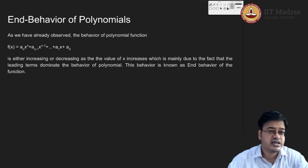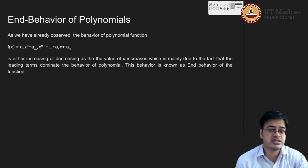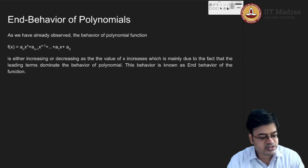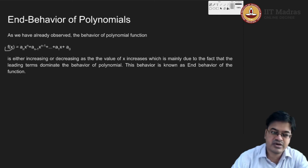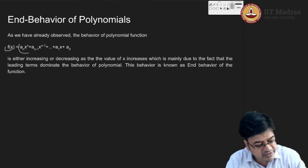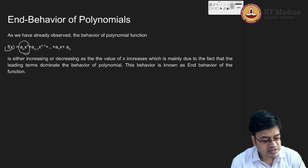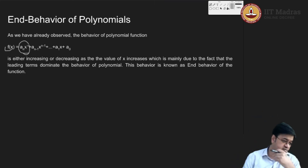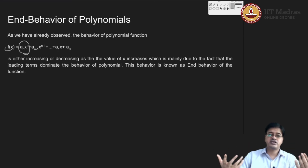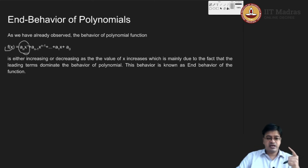For quadratic equations, the behavior is decided by a₂, the coefficient of the highest degree term. In a similar manner, for a polynomial function f(x) = aₙxⁿ + aₙ₋₁xⁿ⁻¹ + … + a₀, the behavior should be decided by the leading term aₙxⁿ. The function has passed through all its possible roots, and after that the only determining factor is the term aₙxⁿ.